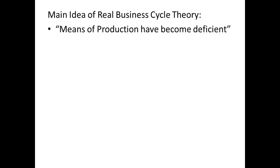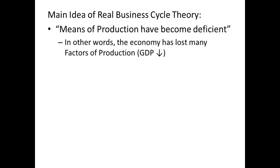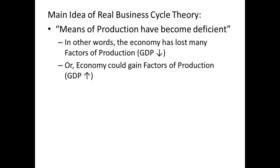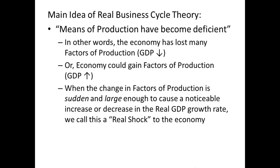And if we destroy or lose or somehow impair our land, labor, and capital, we're obviously not going to be able to produce as much output — we're going to see a decline in GDP. So let's focus on this phrase from Say's book: 'The means of production have become deficient.' What we're basically saying is the economy has lost some factors of production, therefore GDP is going to go down. On the other hand, we could explain a boom with this as well — if the economy suddenly gained factors of production, we'd see a sudden rise in GDP. What we call these are real shocks, or productivity shocks, or supply shocks.